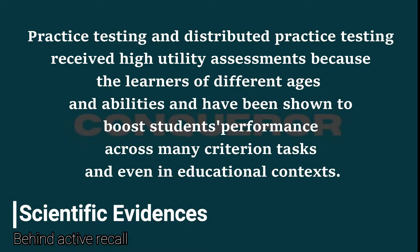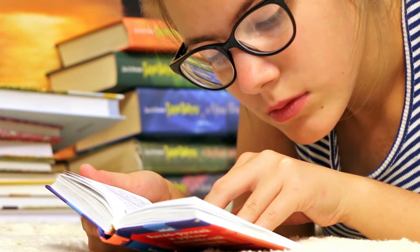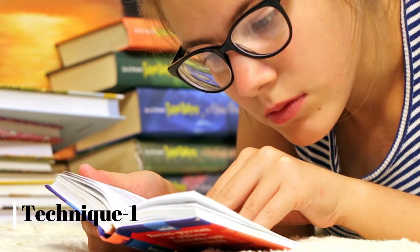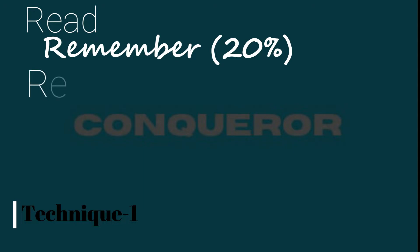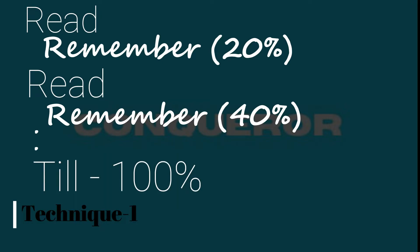So how to apply it? You can do three techniques. Technique one: open the book, read it, close it, and try to recall about 40% of what you read. If you do this process, you can retain close to 100%. This creates a strong connection in your brain, and remembering it will be a good thing.